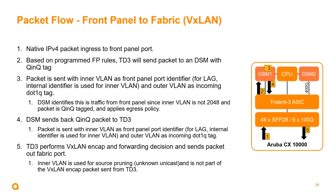The distributed services module identifies traffic from the front panel since the inner VLAN is not 2048 and the packet is Q-and-Q tagged, then applies the egress policy. The DSM sends that Q-and-Q packet back to the Trident 3 with the inner VLAN as the front panel port identifier and the outer VLAN as the incoming 802.1Q tag. The Trident 3 then performs VXLAN encapsulation and forwards the packet to the proper port.